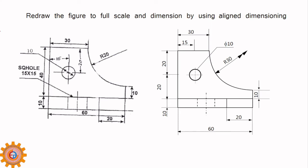Redraw the figure to full scale and dimension using the aligned dimension system. He has used the hole center line as an extension line — that is okay. But this dimension is inside the view, which is wrong. Here this is unidirectional, this is aligned — and this is neither unidirectional nor aligned. The smallest dimension has to move up and this one has to come down.